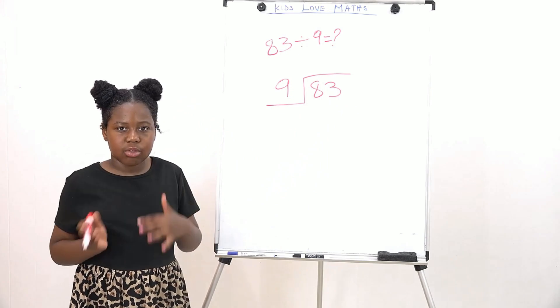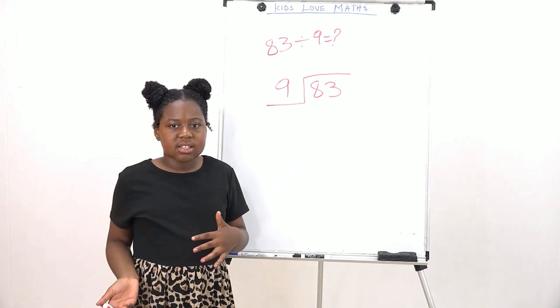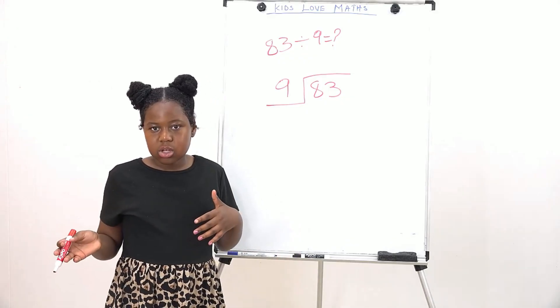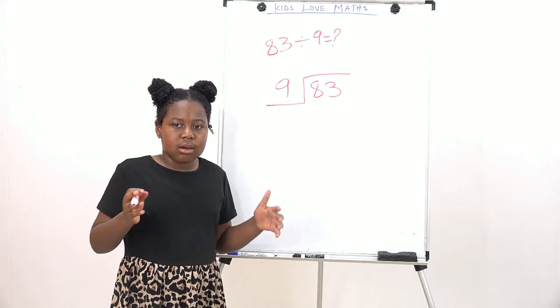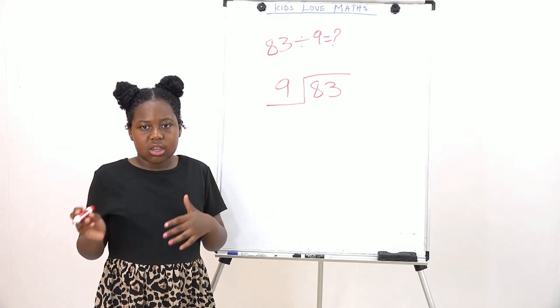So now we need to do 9 divided by 83. Well, we can't divide 9 by 83 without remainder. So we're going to have to find the closest number that 9 can multiply to get the closest to 83.